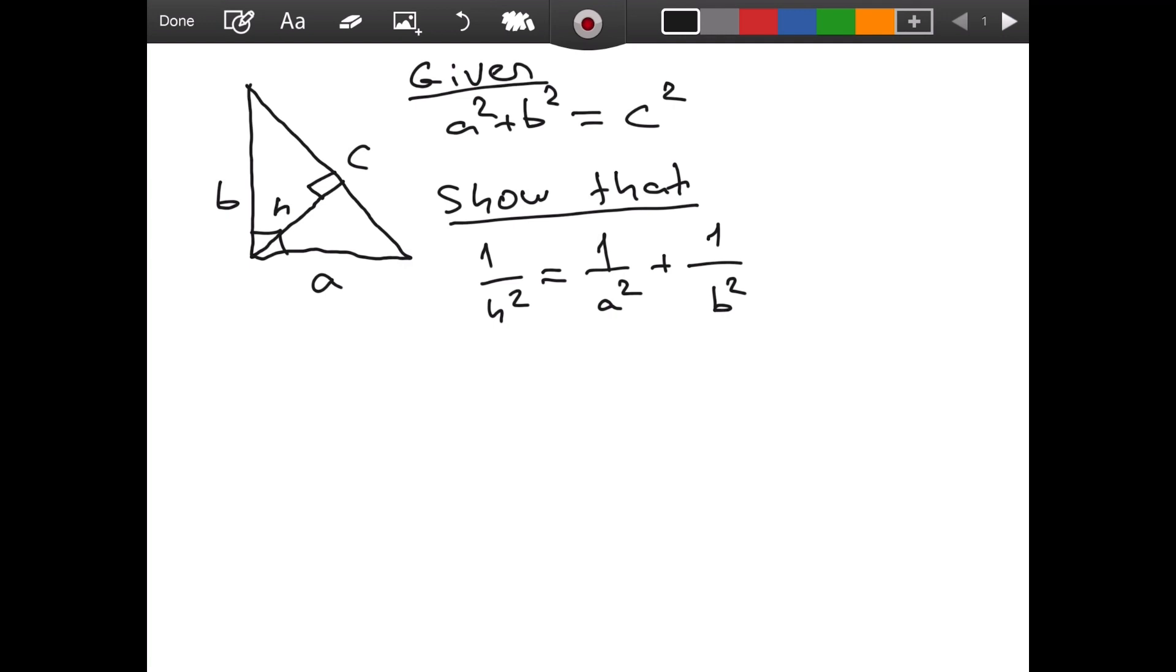Okay, so, actually, let me do that with a different color. So, this is the height. Alright, this is H. So, we want to show that this equation, the so-called inverse Pythagorean theorem, is right. So, how can we do this?